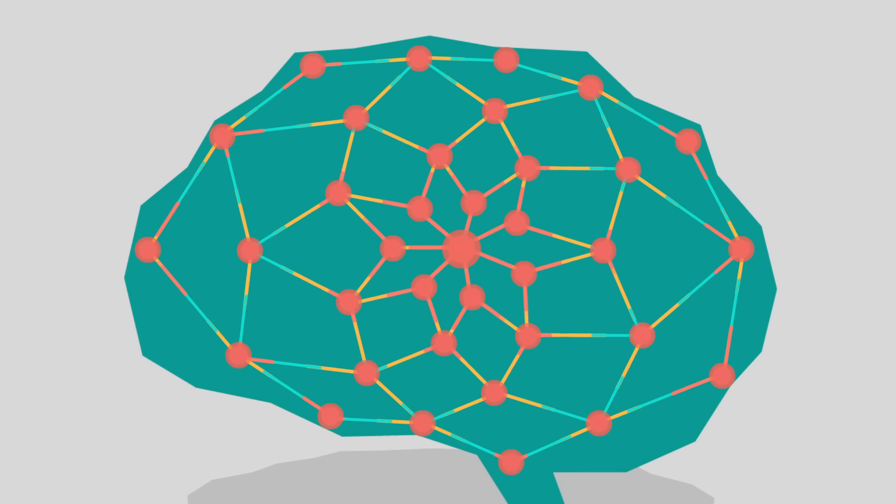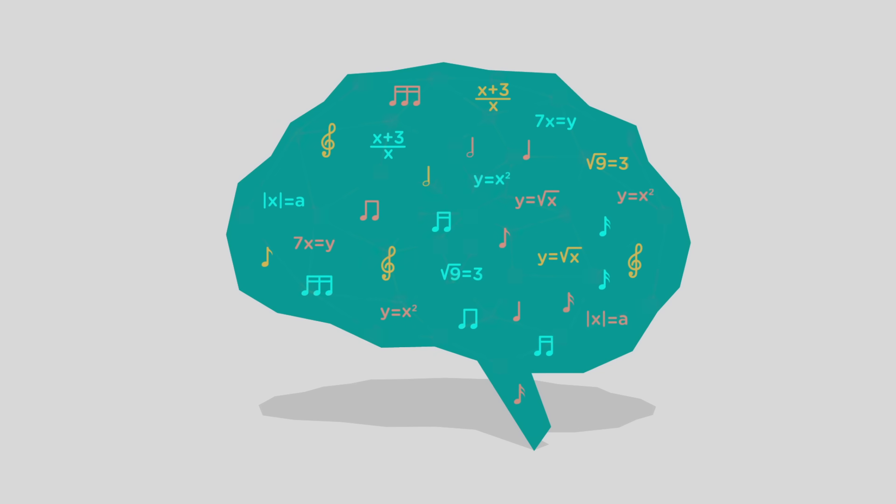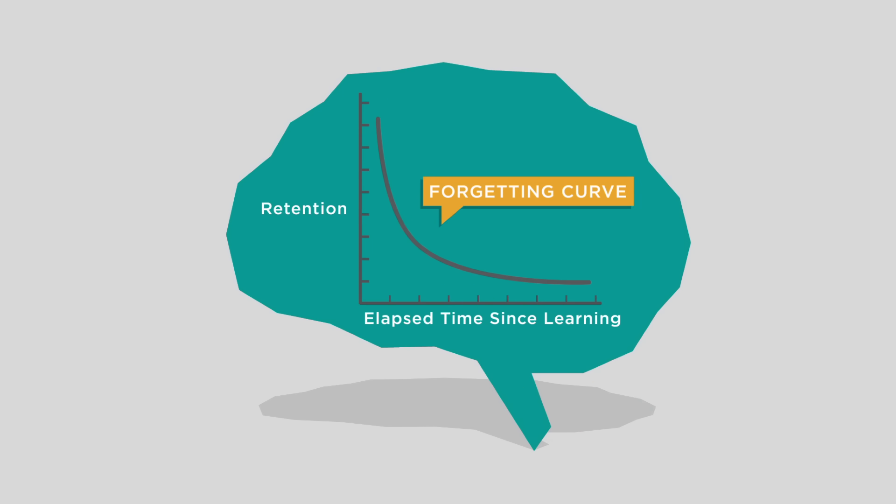At first glance, our ability to remember things doesn't seem very impressive at all. Nineteenth-century psychologist Herman Ebbinghaus demonstrated that we normally forget 40% of new material within the first 20 minutes, a phenomenon known as the forgetting curve.